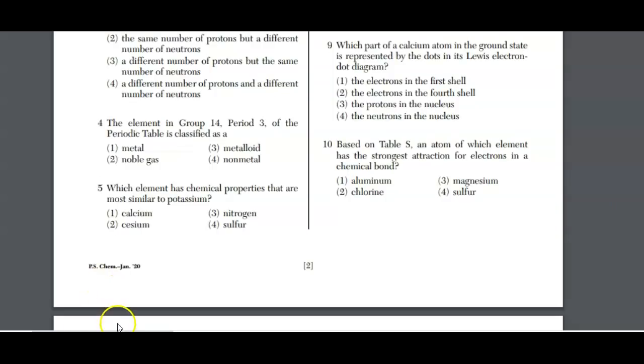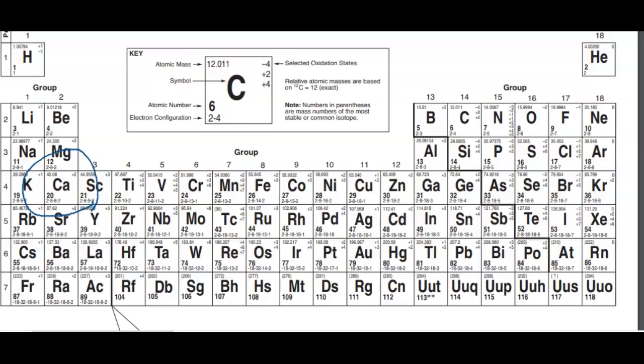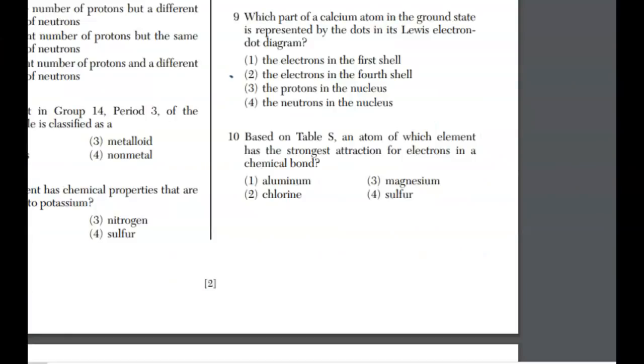For number nine, which part of a calcium atom in the ground state is represented by the dots in the Lewis dot diagram? The dots represent the outermost electrons, the valence electrons. Calcium has two valence electrons. Looking at the periodic table, the electron configuration is 2-8-8-2. The valence electrons are in the fourth level. That makes the answer choice two.